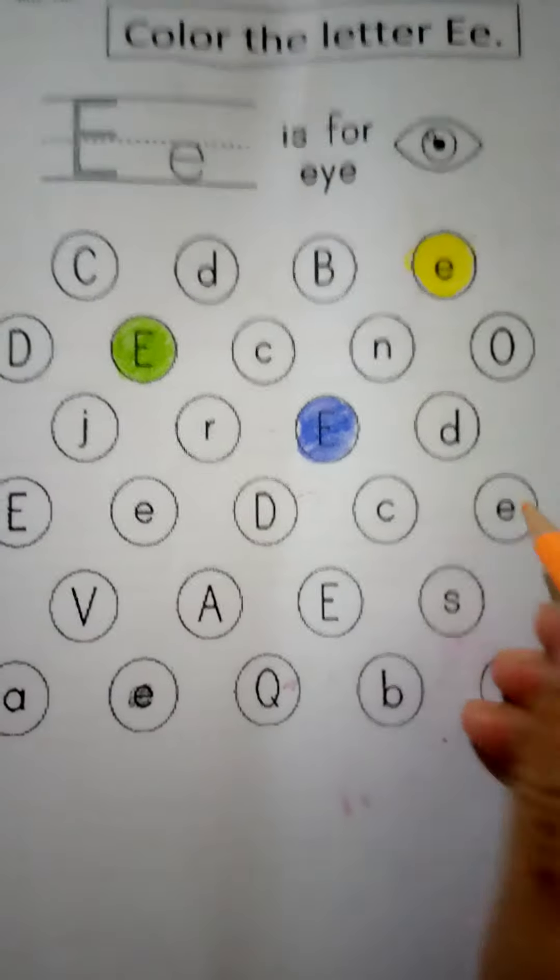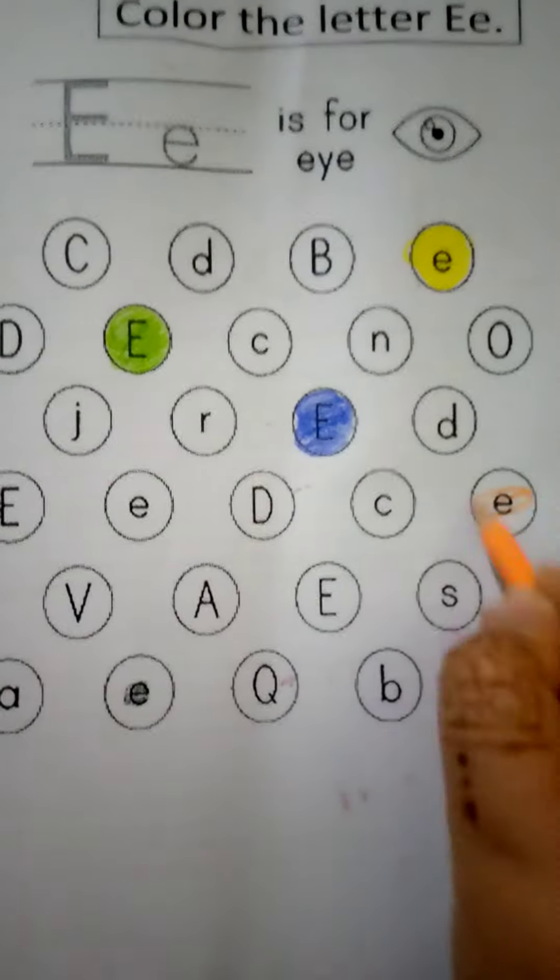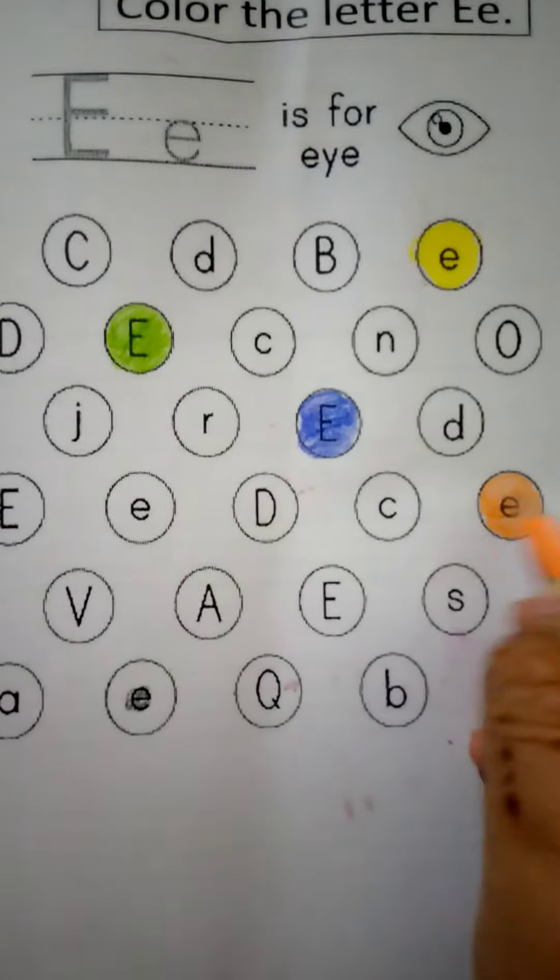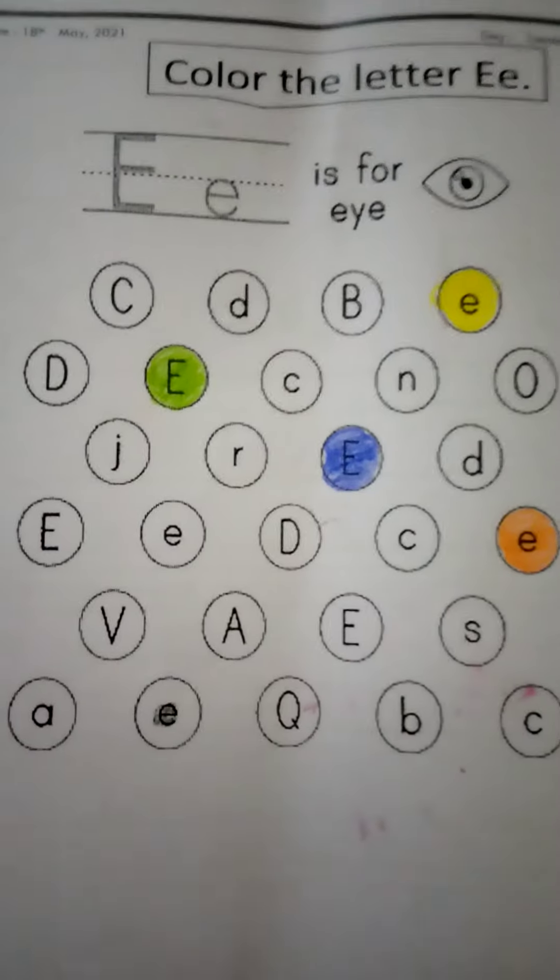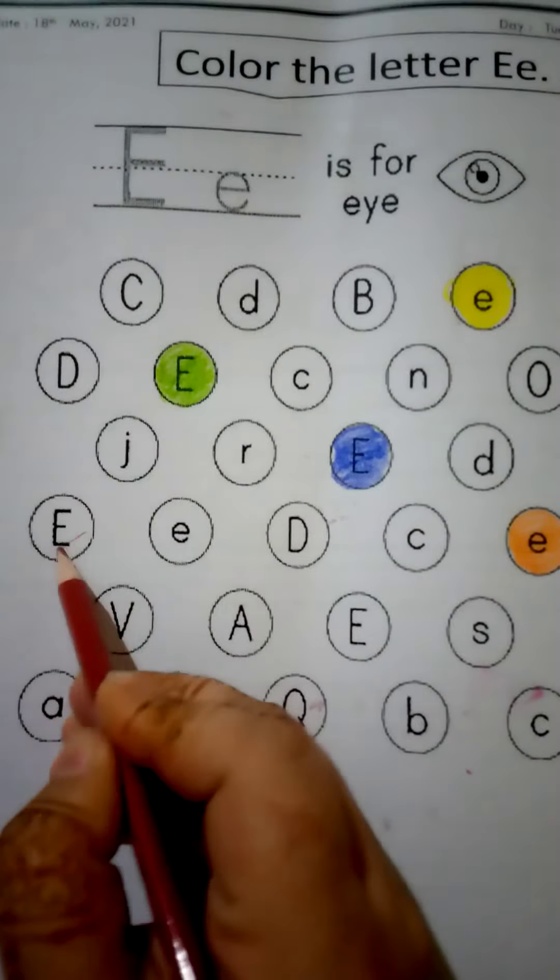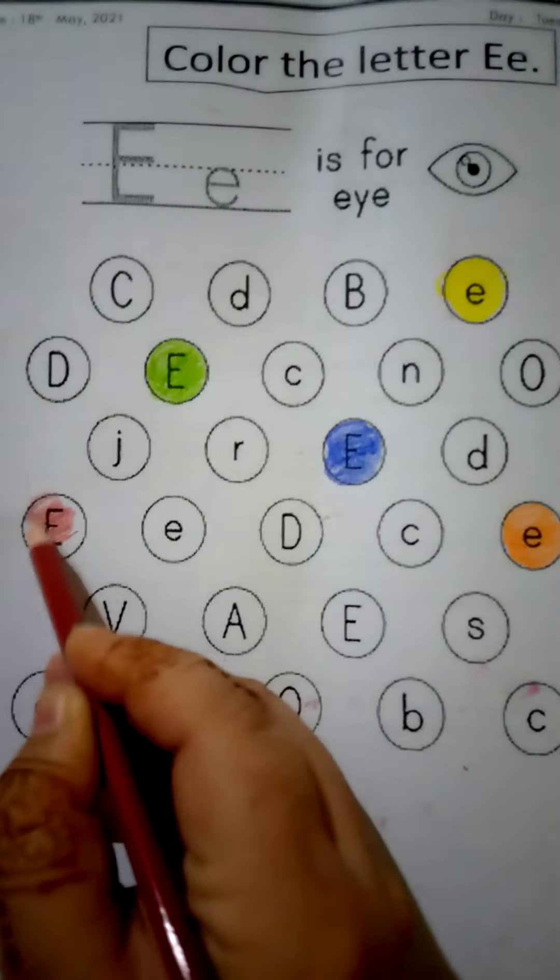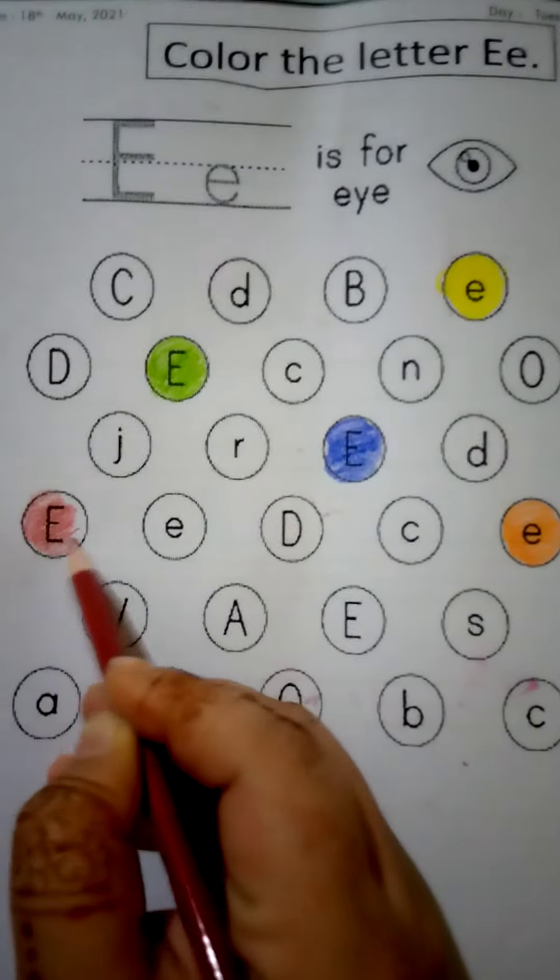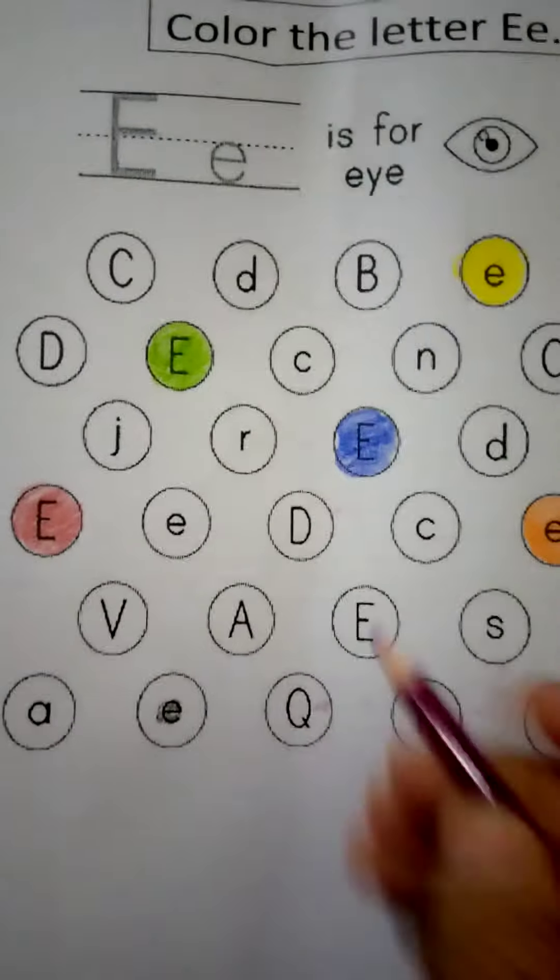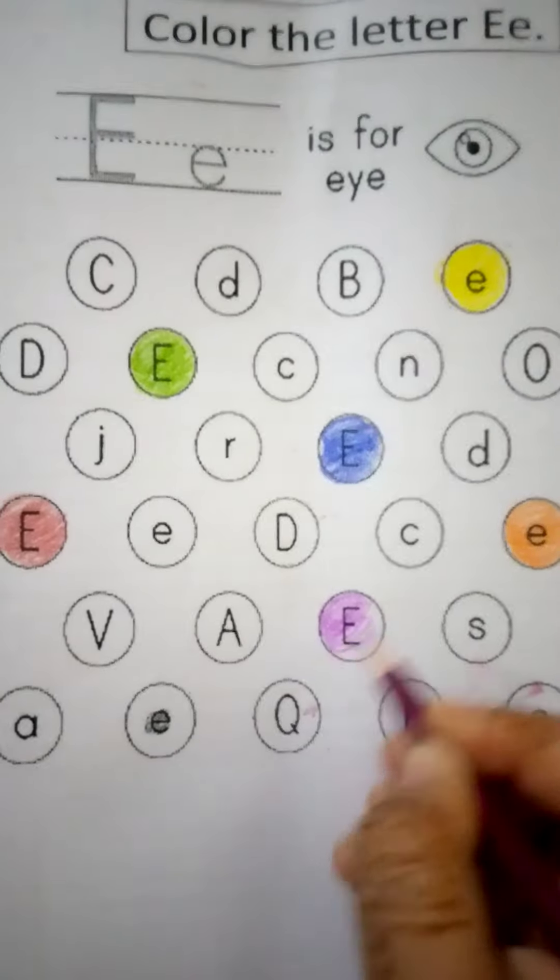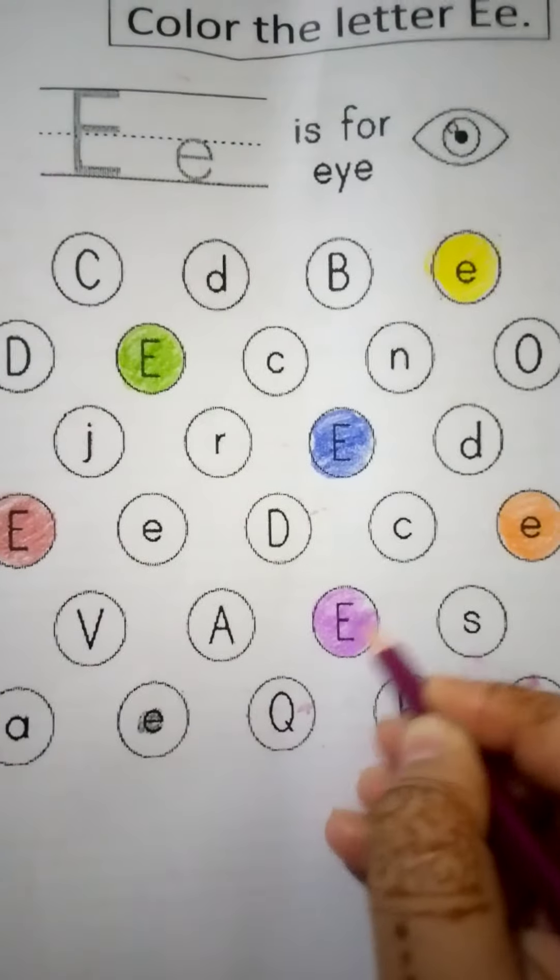In this circle, there is small e. Color this circle. Capital E. This is also capital letter E. This is capital E.